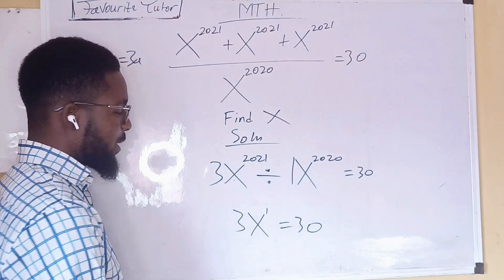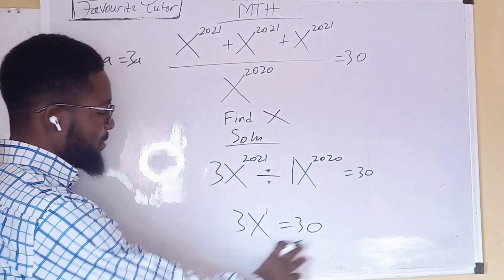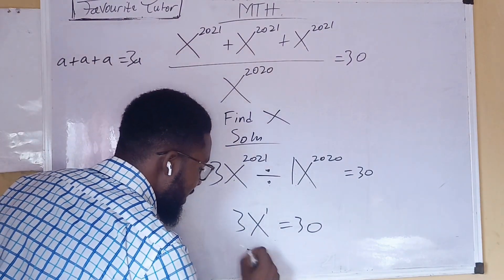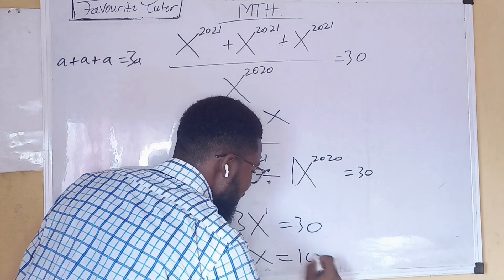So therefore, we are looking for x. We divide both sides by 3. And if we divide both sides by 3, x equals 10.